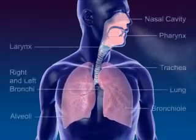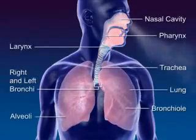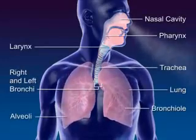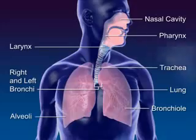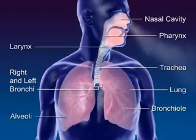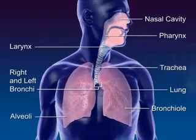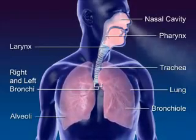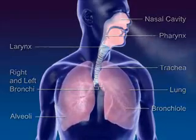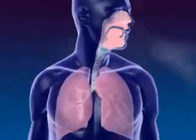The respiratory system moves air through the nose, pharynx, larynx, trachea, and bronchus to the alveoli, where gas exchange between oxygen and carbon dioxide occurs.